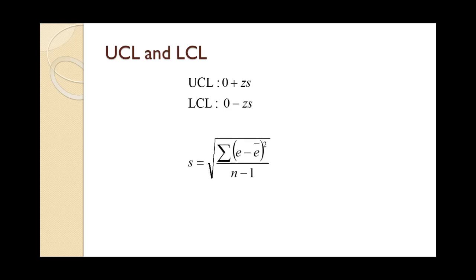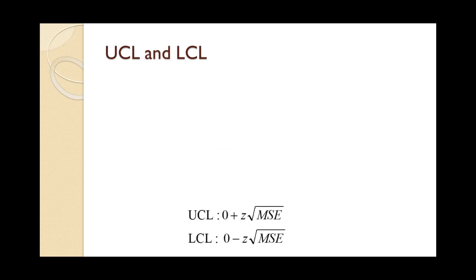The formula for the standard deviation of the distribution of errors is shown on the slide. This s value is used in the formula for the upper and lower control limits. While this approach works, in practice the square root of the mean squared error is used as an estimate of s. The revised formulas using the mean squared error are shown on the slide. These are the formulas that will be used in this tutorial.